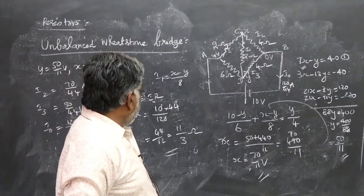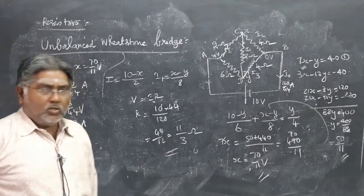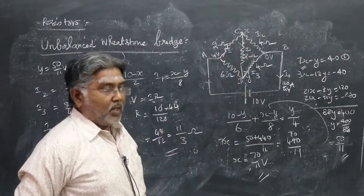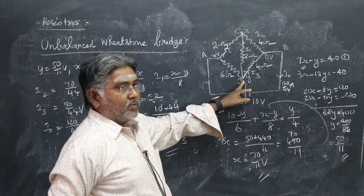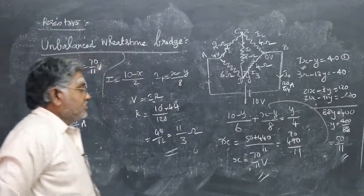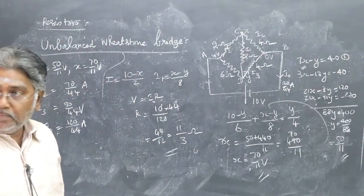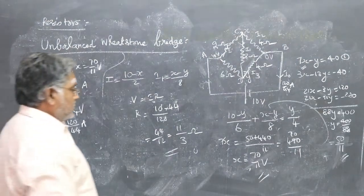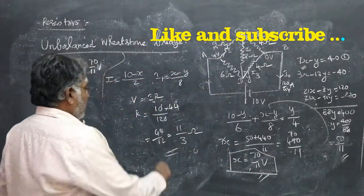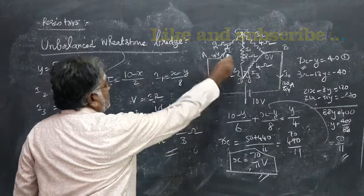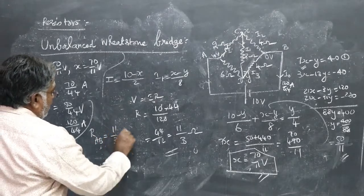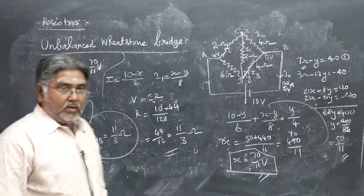Using this method you can also find the current through all other branches, since you now know the potential at every node and all the resistances. The final answer: the effective resistance between A and B is 11/3 ohm. We will also solve this problem using other methods.